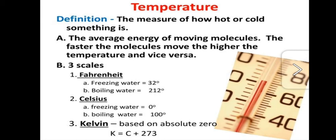The freezing point of water is 0 degrees Celsius and boiling point is 100 degrees Celsius. The Kelvin scale is based on absolute zero. The conversion formula is: K = C + 273, where C is degrees Celsius. So Kelvin equals degrees Celsius plus 273.